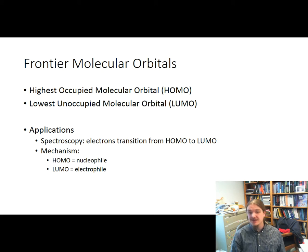The other frontier molecular orbital is the lowest unoccupied molecular orbital. So it's the lowest energy molecular orbital with no electrons in it. Being able to identify and know something about the frontier molecular orbitals has applications in spectroscopy.